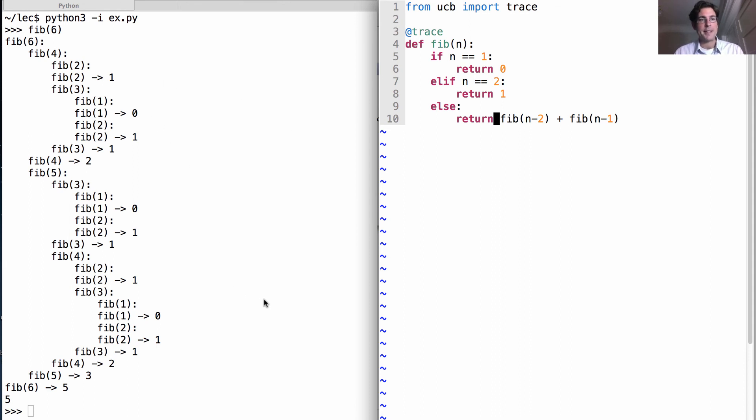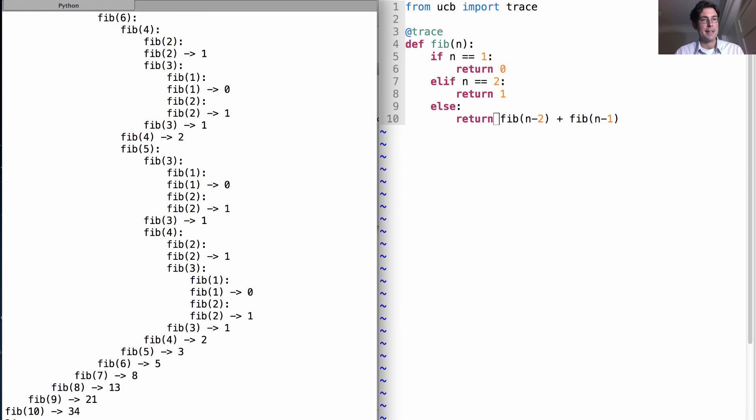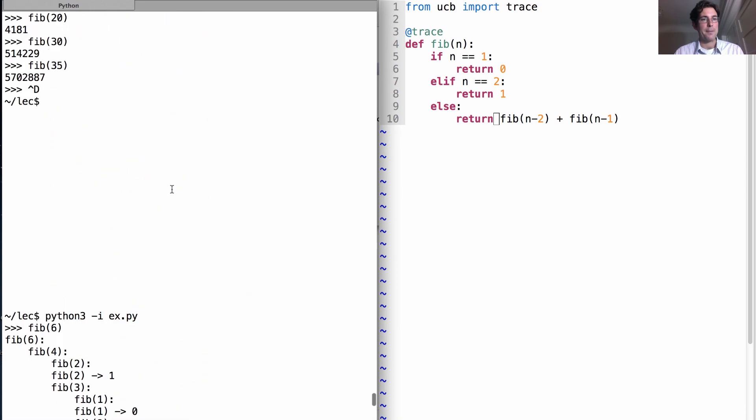Okay, so we've visualized this tree recursive process and we've realized that it gets pretty big. So if I do fib(10), all of a sudden I have quite a bit of work to do.